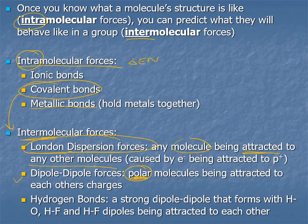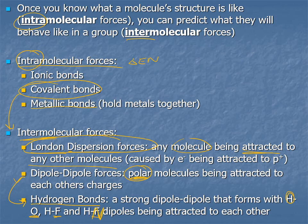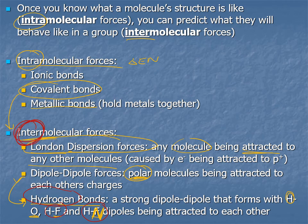A particular type of dipole-dipole force so strong it gets its own label is hydrogen bonding. This occurs when hydrogen is bonded to something super electronegative — oxygen, fluorine, or nitrogen. These create very strong dipoles. Remember, you can't show a hydrogen bond with a single molecule — that would be intramolecular. To show an intermolecular hydrogen bond, you need at least two molecules.